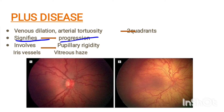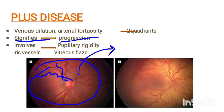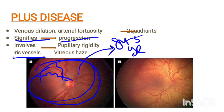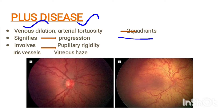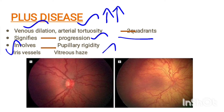When looking at the retina in ROP, we see venous dilatation and arterial tortuosity showing progression. Progressive disease can go to stage 5, which leads to blindness. Plus disease also involves the iris vessels — retinal vessels involving iris vessels causes pupillary rigidity and vitreous haze. So plus disease involves at least two quadrants with venous dilatation and arterial tortuosity.